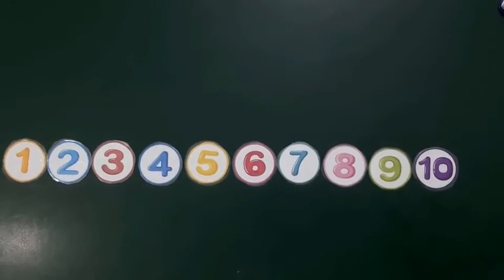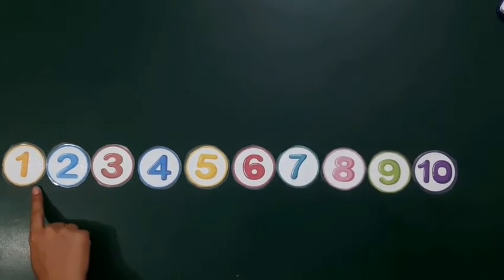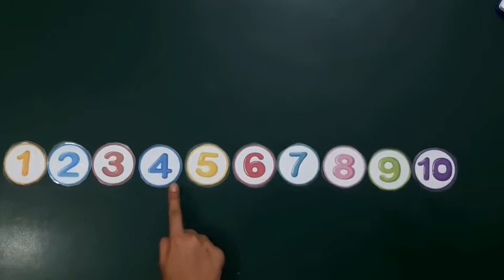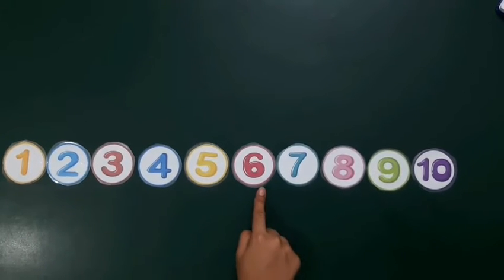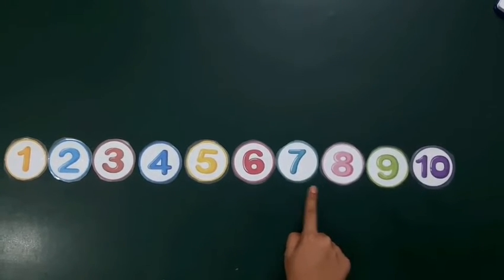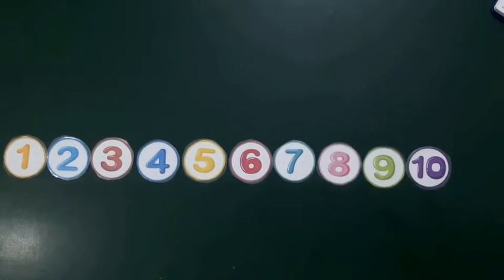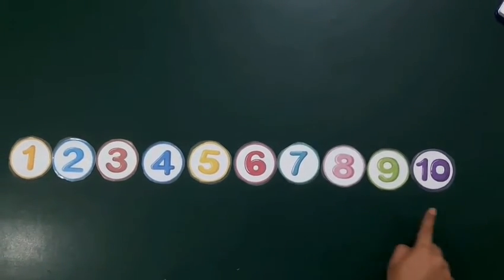You can see numbers 1 to 10. Let's count them: 1, 2, 3, 4, 5, 6, 7, 8, 9, 10. These are numbers 1 to 10.